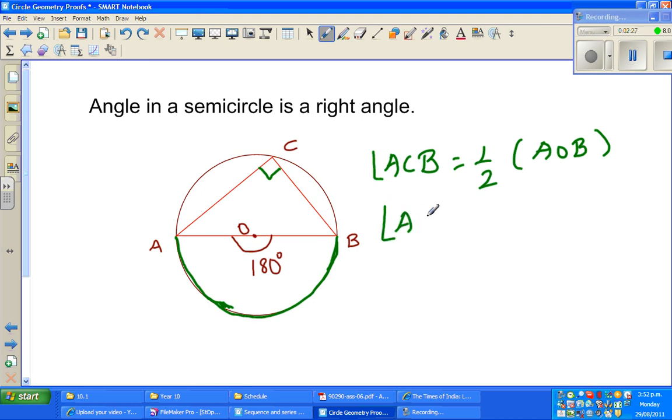Angle ACB is an angle in a semicircle. This is a semicircle, and this is a diameter. So angle ACB is half times 180 degrees, which equals 90 degrees.